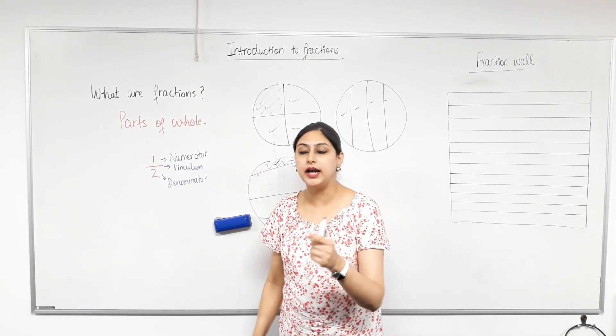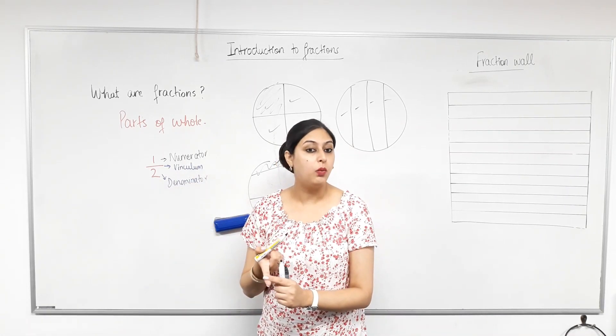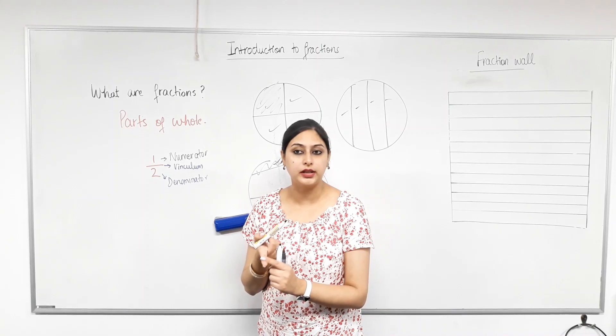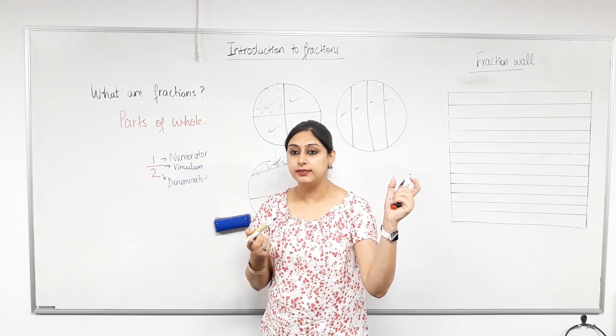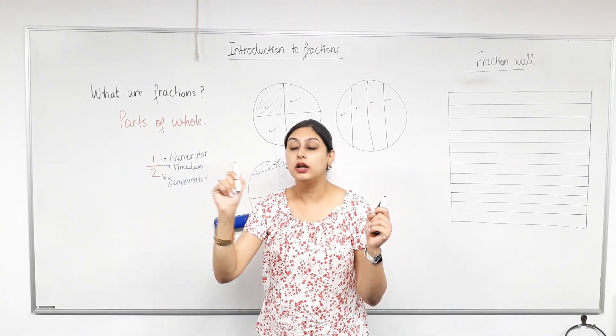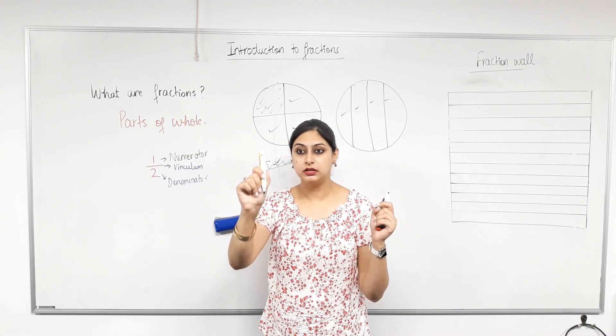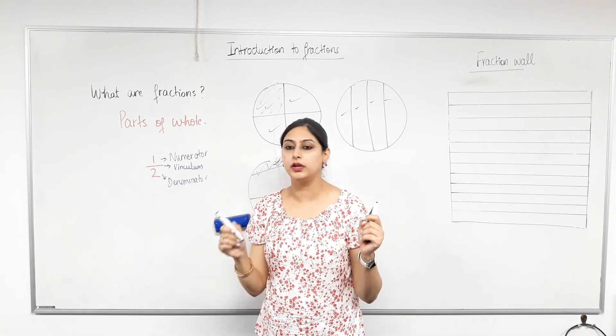So when you are dividing a whole into different parts, what is the most important thing about those parts? Raise hands, please. They are even. They are even. What does that mean? Use proper terminology. They are all equivalent. Not even equivalent? Equal. Equal. Those parts are equal. Is that clear?